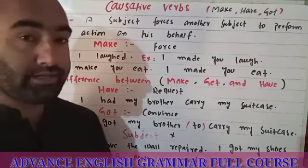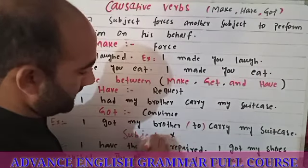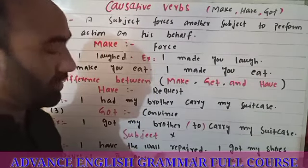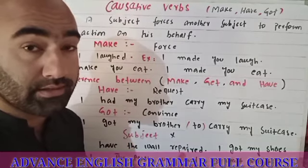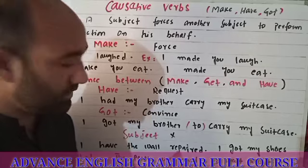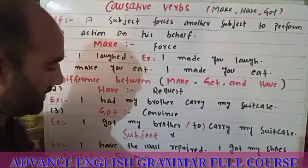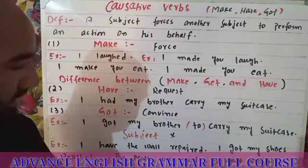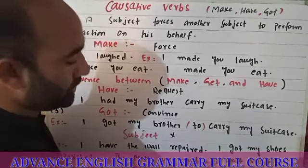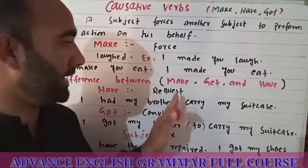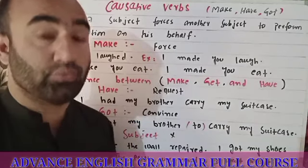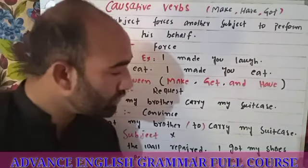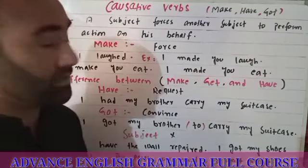But whenever there is no object subject available in the sentence, the third form of the verb will be used. For example: 'I have the wall repaired.' 'I got my shoes polished.' And in passive sentences, 'to' can be used with 'make': 'The people were made to wait outside.' This is the passive voice sentence.